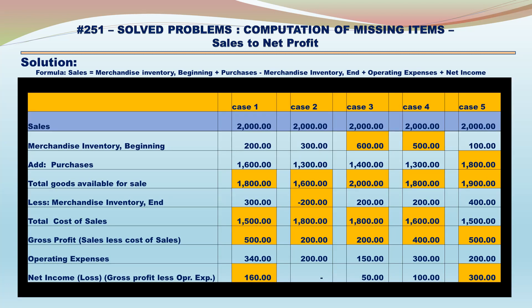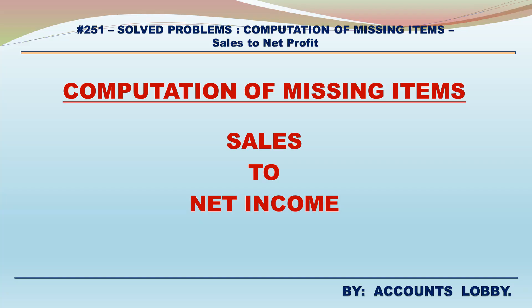Recap: The formula used is — Sales equals Merchandise Inventory Beginning plus Purchases minus Merchandise Inventory Ending plus Operating Expenses plus Net Income. These are the missing items as computed per the formula.